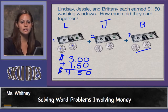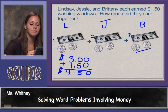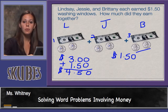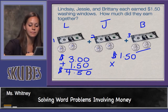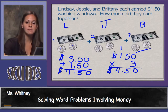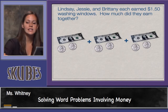The total amount the girls earned was four dollars and fifty cents. Now we can solve this another way using multiplication. I know that each girl earned the same amount — one dollar fifty cents — and I'm going to multiply that amount by three, for each person that earned that amount. I bring down my decimal. I got four dollars and fifty cents again.